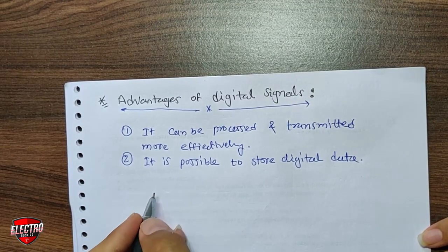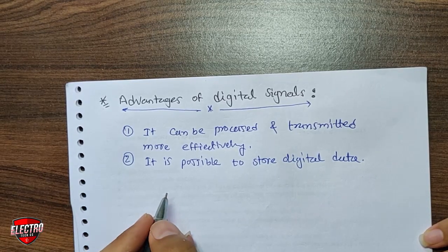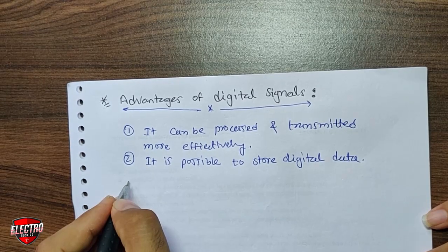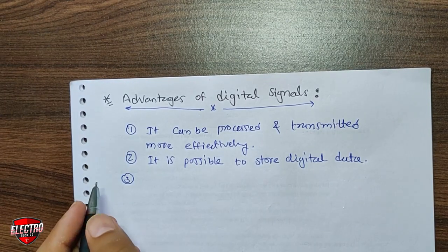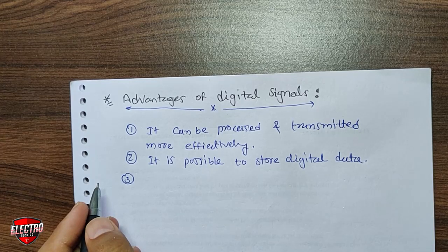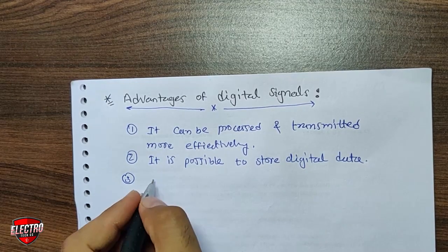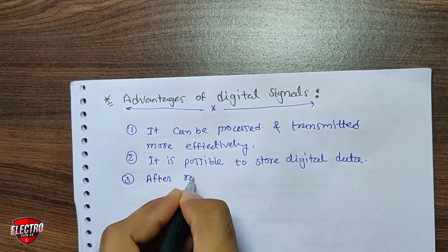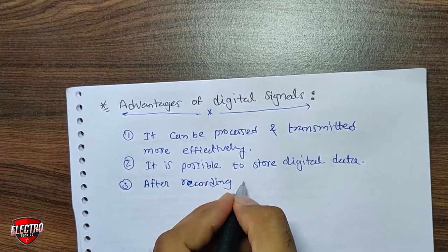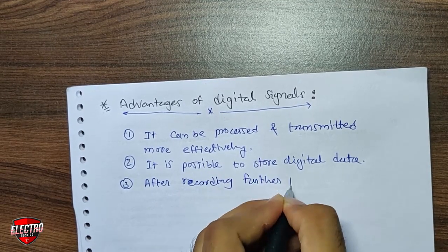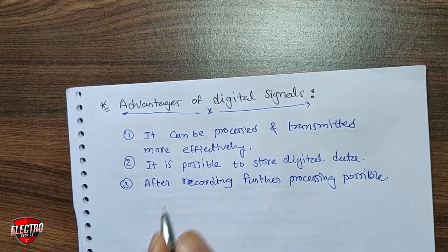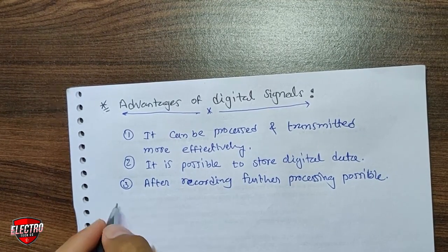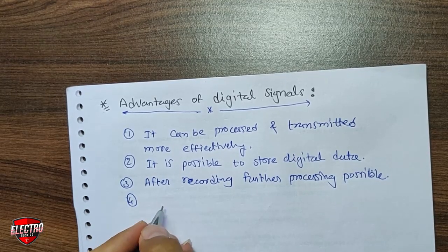The second advantage is that it is possible to store digital data or digital signal — we cannot store an analog signal. We have different types of digital data like images, documents, music, videos, and many more. The third advantage is that after recording, further processing is possible in digital signal, which is not possible in analog type of signal.